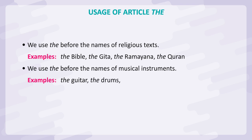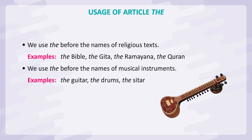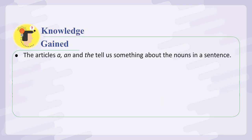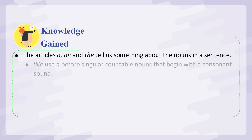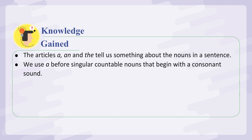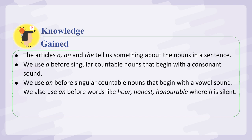We use the before the names of musical instruments. Examples: the guitar, the drums, the sitar. Knowledge gained: The articles a, an, and the tell us something about the nouns in a sentence. We use a before singular countable nouns that begin with a consonant sound. We use an before singular countable nouns that begin with a vowel sound.